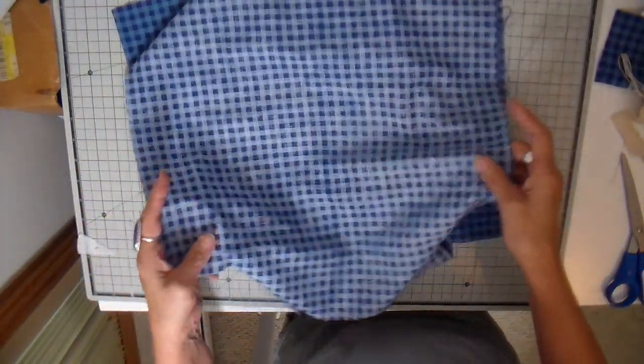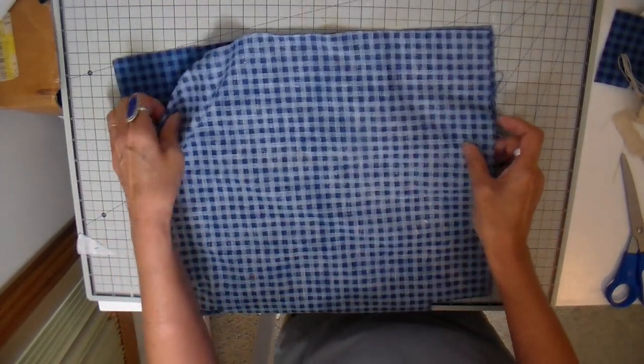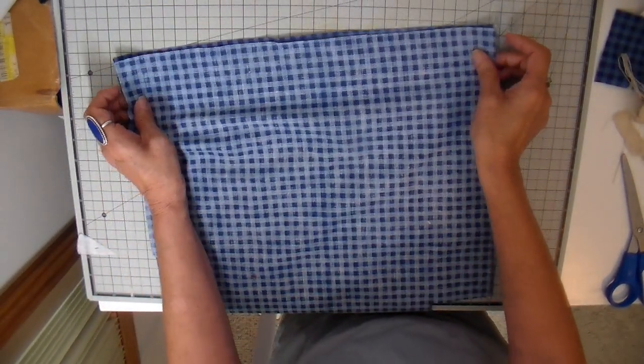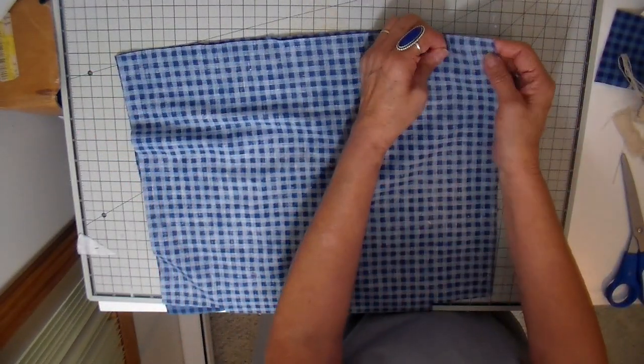I'm on to my lining now and I'm putting my pieces right sides together for this one and constructing that the same as I did the front. I will be sewing my side seams taking about a half inch and then also sewing the bottom together.